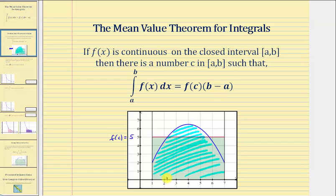Here we'd have a value of c, which we'll call c sub one, as well as here, another value that gives us a function value of five, so we'd call this c sub two. We illustrated this by thinking in terms of area, but even if f of x is negative over this closed interval, this theorem is still true.